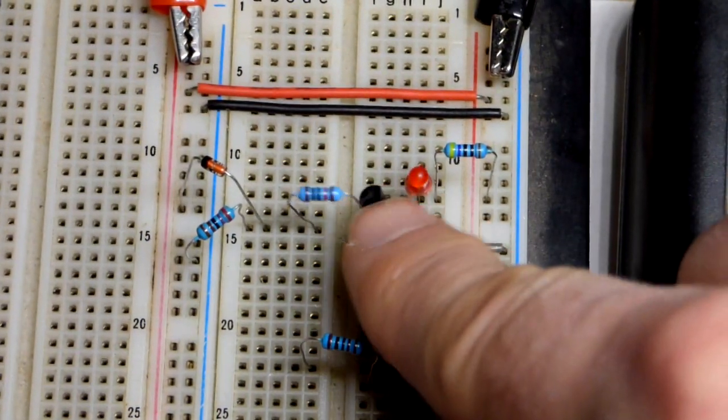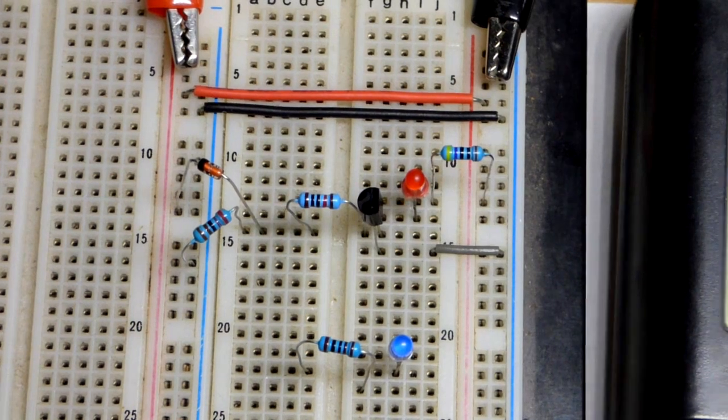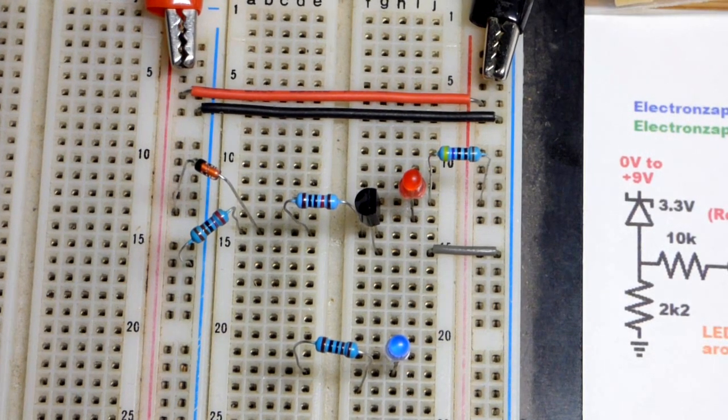Now, we're going to do that swap that we looked at before. So yeah, there's the 2N3904. It's an NPN bipolar junction transistor.